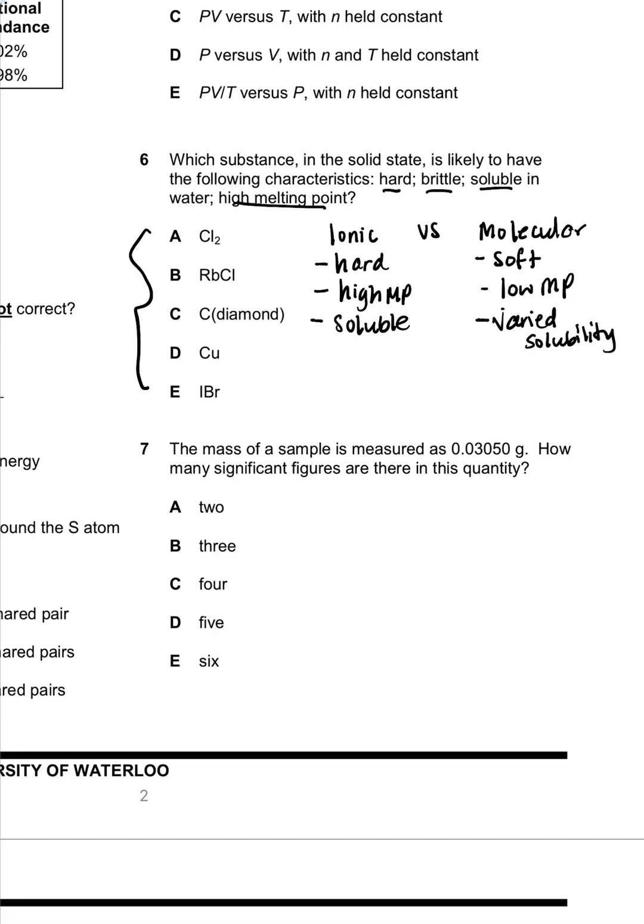I can automatically tell that this will not be a molecular substance, because molecular compounds are soft, generally have a lower melting point, and they do have varied solubility, but many of them are insoluble. So I can go ahead and eliminate A, and I can eliminate E,